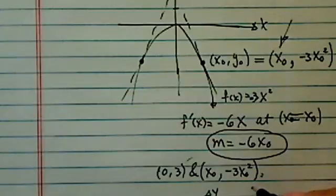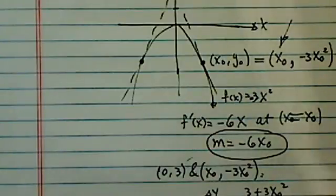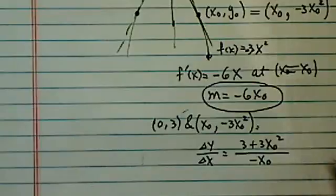Slope says it's changing in y over changing in x, so we're going to grab changing in y, which is 3 minus minus, so that becomes 3 plus 3x0 squared, and then 0 minus x0 is minus x0.